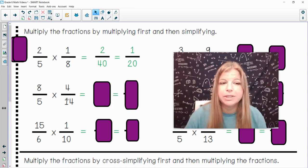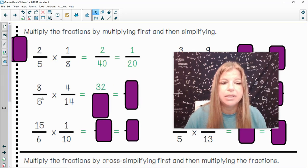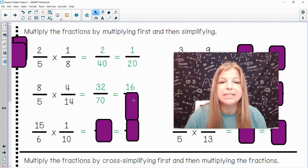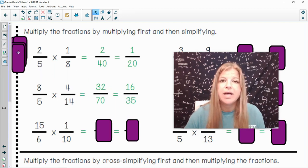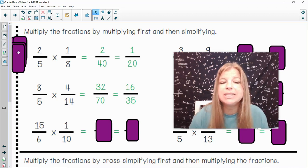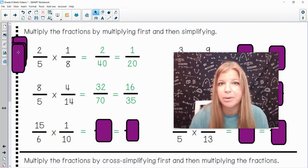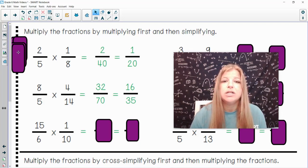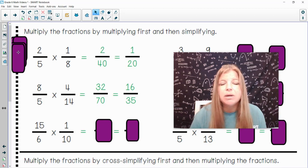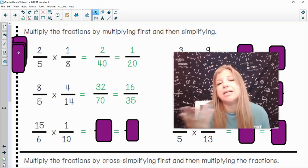8 fifths times 4 14ths. 8 times 4 is 32. 5 times 14 is 70. I could divide both of these by 2. 32 divided by 2 is 16, and 70 divided by 2 is 35. Now, one of the key ways to know that you did simplify it completely, that 2 was the greatest common factor of 32 and 70, is look at the result. 16 and 35 don't have any common factors. Your factors of 16 besides 1, and we don't care about 1 because if I divide by 1 I get the same answer, 2, 4, 8, 16. 35 is 5, 7, 35. So I know that 16 35ths is my final answer.